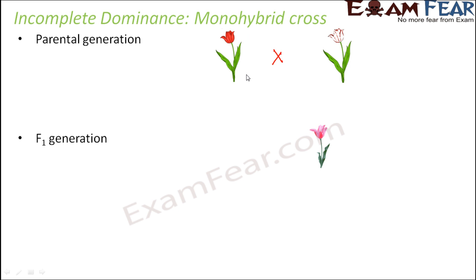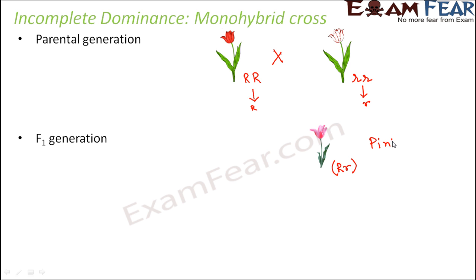The red flowers are denoted as capital R capital R, because the parental generation is considered homozygous. The white flowers are denoted as small r small r. The only gamete that the red parent can give is capital R, and the gamete from the white parent is small r. So the genotype for the F1 pink flowers is capital R small r. As per Mendel, capital R should dominate to give all red flowers, but instead all the flowers were pink — showing blending between red and white to form an intermediate phenotype.